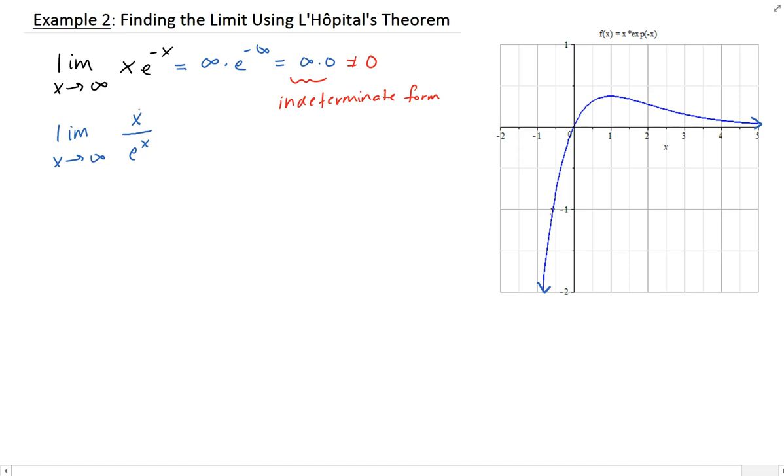Now we can do a direct substitution to see what we get. When you do that, you get infinity over e to the infinity, which is infinity over infinity—also an indeterminate form.